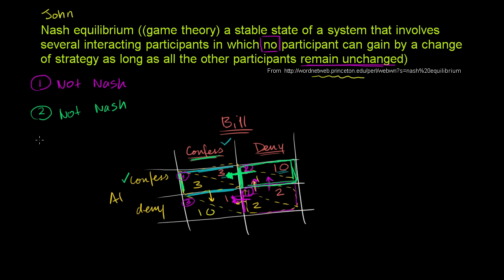Now let's go to state three — Bill confessing and Al denying. From Al's point of view, assuming Bill is constant in his confession, Al can improve his scenario by going from denying to confessing. That by itself is enough evidence that this is not a Nash equilibrium — we don't even have to think about Bill. It's actually symmetric: there's nothing Bill could do holding Al constant that would improve things, but just the fact that Al can move tells us state three is not a Nash equilibrium.